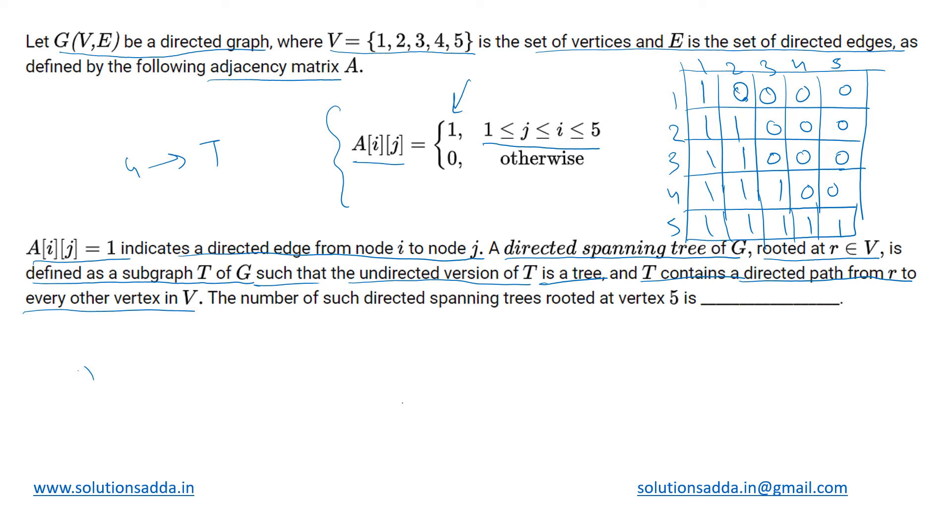This is like a directed acyclic graph (DAG). We have a node and from that we traverse in the path to all other nodes which are present in that graph. So we have been given 5 as the root node, and we have to find out the number of such directed spanning trees.